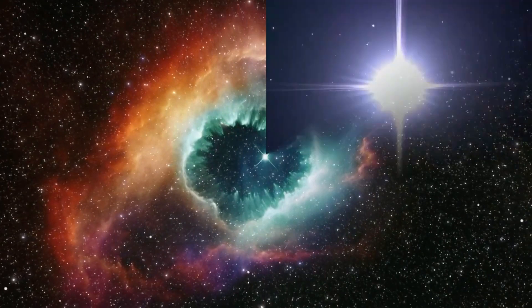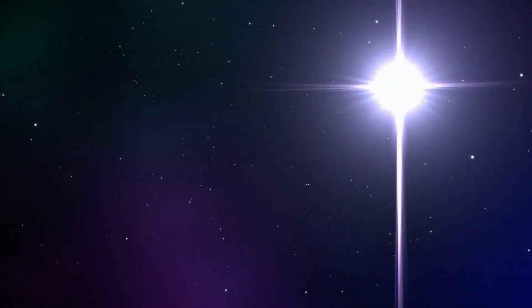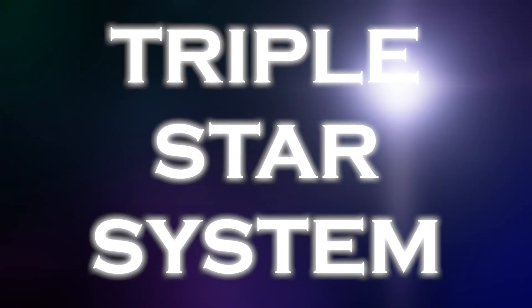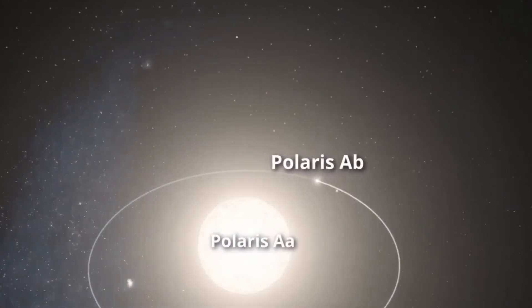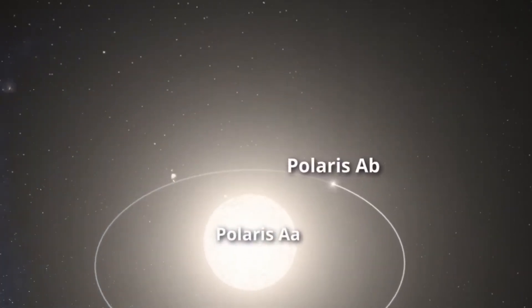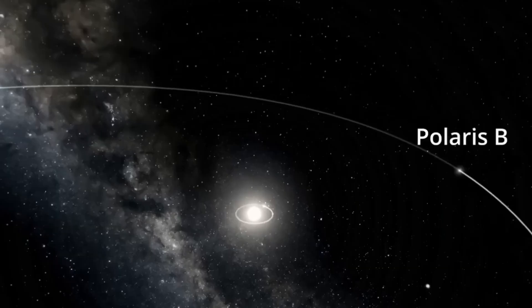Despite its appearance as a lone star, it is actually part of a rather complex triple star system. Within this system, the primary stars are Polaris AA and Polaris AB, which, seen with the naked eye, look like a single star.